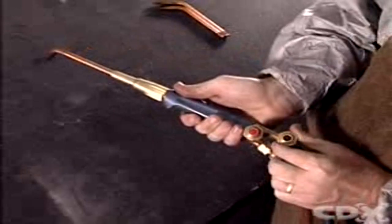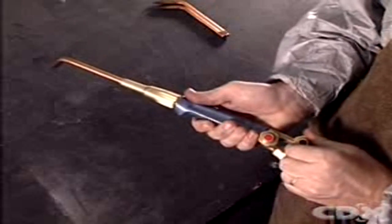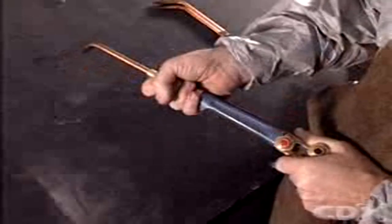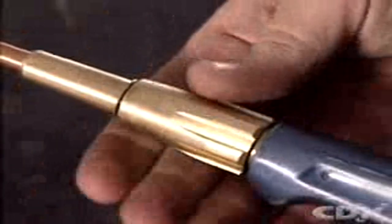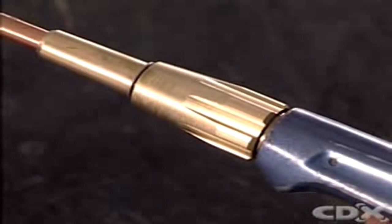Hold the torch handle in your hand so that you can comfortably adjust the oxygen and acetylene taps. Position the tip so that it faces away from you. Gently tighten the tip securing fitting.